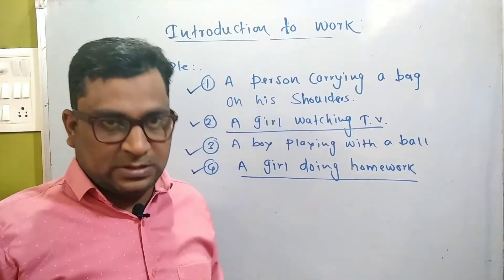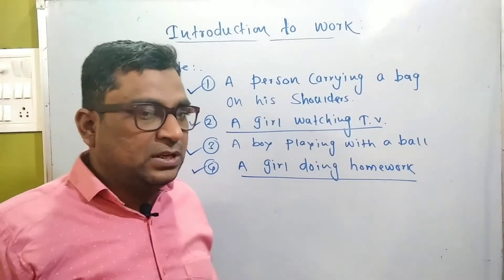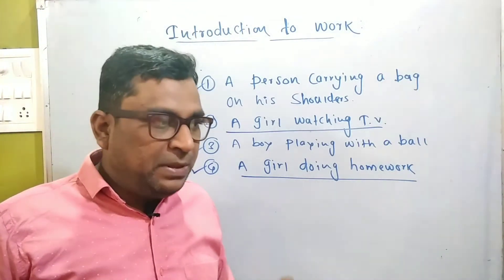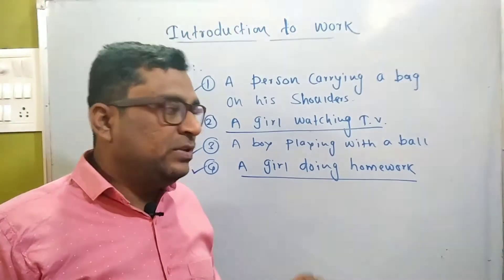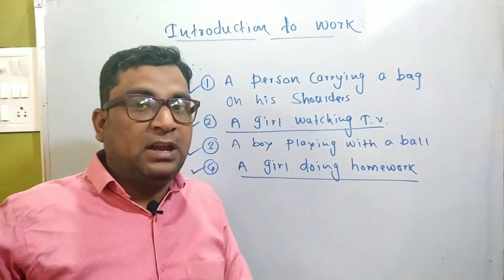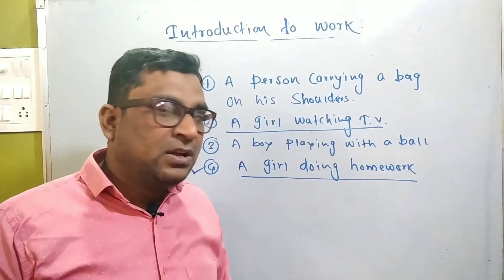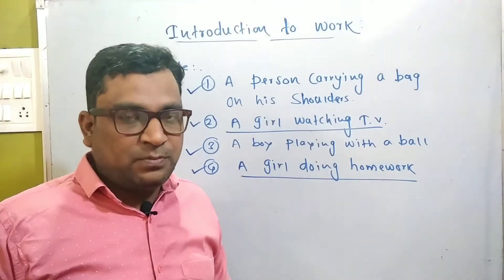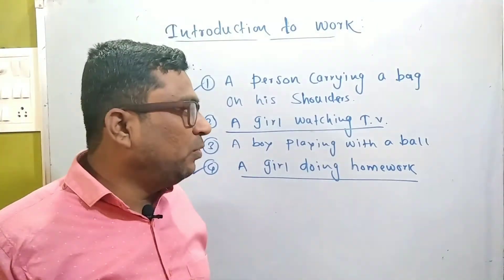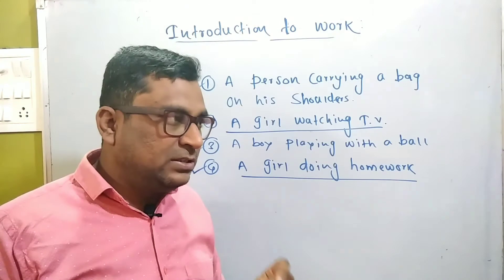In physics, we are dealing with only physical work. For physical work, two things must happen: first, you have to apply some kind of force, and because of that force, displacement must occur. For example, a person carrying a bag — force is applied, the bag is lifted onto the shoulder, and the person is moving. A boy playing with a ball — he applies force on the ball, the ball moves, and the boy also moves. In both cases force and displacement are present, so work is considered done in physics.